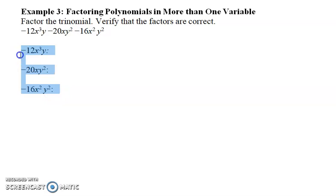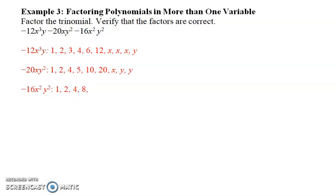And now we're going to list all the factors. We've got 1, 2, 3, 4, 6, and 12, x, x, x, and y. The next one we have, and don't worry about the negative, the negative obviously you can take that whenever you need to. So 1, 2, 4, 5, 10, 20, x, y, and y. And the next one is 1, 2, 4, 8, 16, x, x, y, y. So I'm listing all the factors of my three terms in my trinomial, my polynomial here.